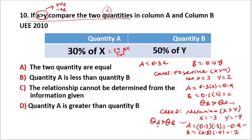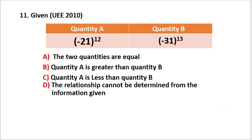When we have positive and negative cases giving different results, the relationship cannot be determined. The key point about negative c: for example, minus 1 raised to an even power is positive, while minus 1 raised to an odd power is negative.